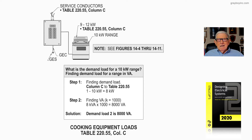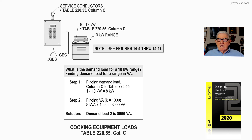In the boxed-in information, the question is: what is the demand load for a 10 kW range? Find the demand load in VA. Step one — we have one 10 kW range, so we can use 8 kW in accordance with Column C of Table 220.55. To convert from kVA to VA, we take 8 kVA times 1,000, because K equals 1,000, giving us 8,000 VA. The demand load is 8,000 VA. That's what Figure 22-8 is illustrating: cooking equipment loads in accordance with 220.55, Column C.